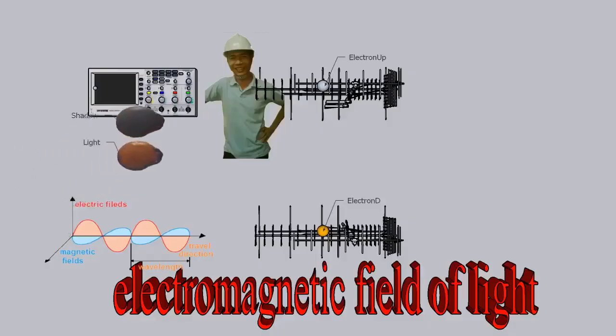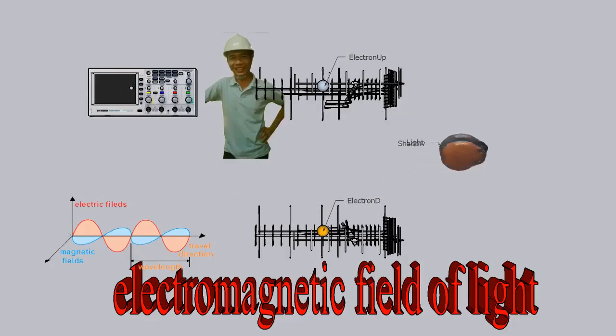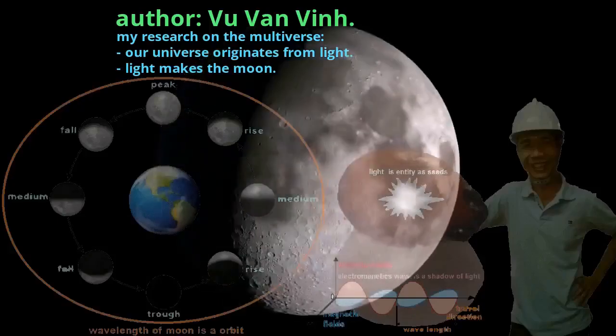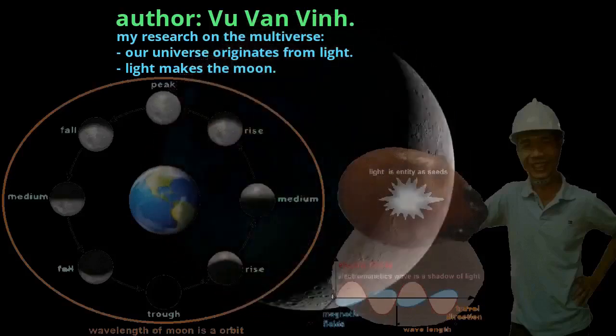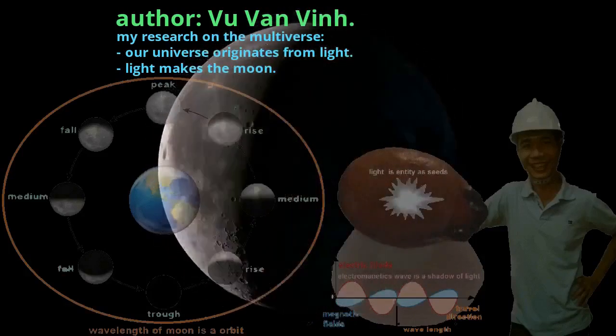To understand light, we experiment with passing photons through two receiver antennas. Light travels through spacetime similar to the moon orbiting the earth. The electromagnetic field is similar to the shadow of the moon when viewed from the earth.